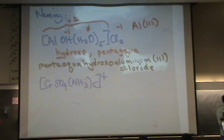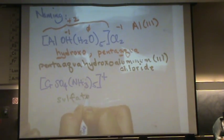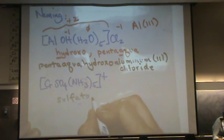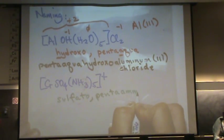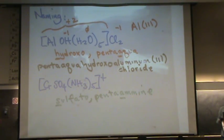Move on to the second one. Everybody ready? Okay. Here, we've got the sulfate, which is sulfato. We've got five amines. So penta amine. And A is going to come before S. So penta amine sulfato will go in that order.